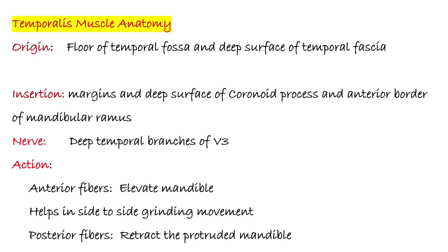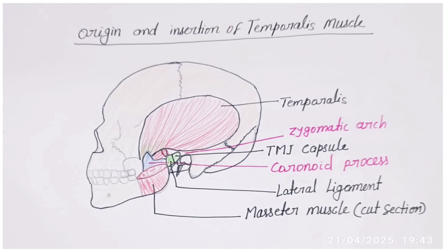Next, the temporalis muscle. It is a fan-shaped muscle originating from the temporal fossa and inserting on the coronoid process and anterior border of the ramus of the mandible. It is supplied by the deep temporal branch of the mandibular nerve. Its action: anterior fibers elevate the mandible and help in side-to-side grinding movement; posterior fibers retract the protruded mandible. This diagram shows the origin and insertion of the temporalis muscle, with its broad attachment on the side of the skull narrowing down into the mandible.